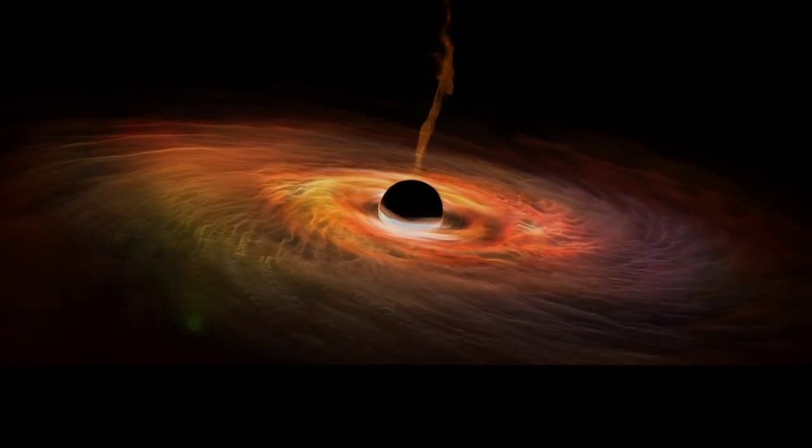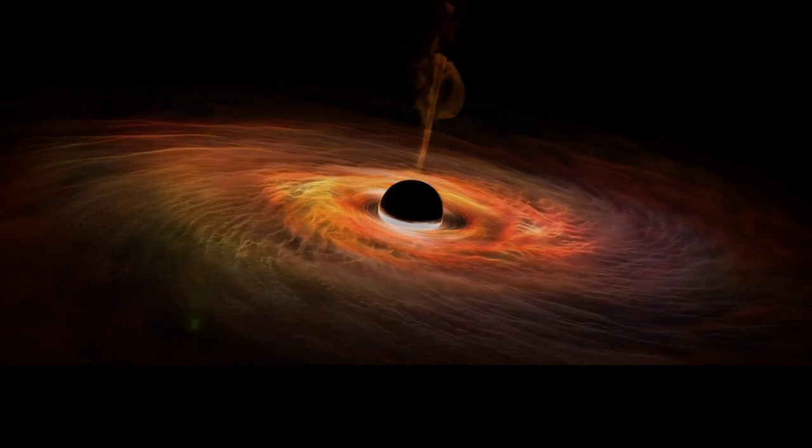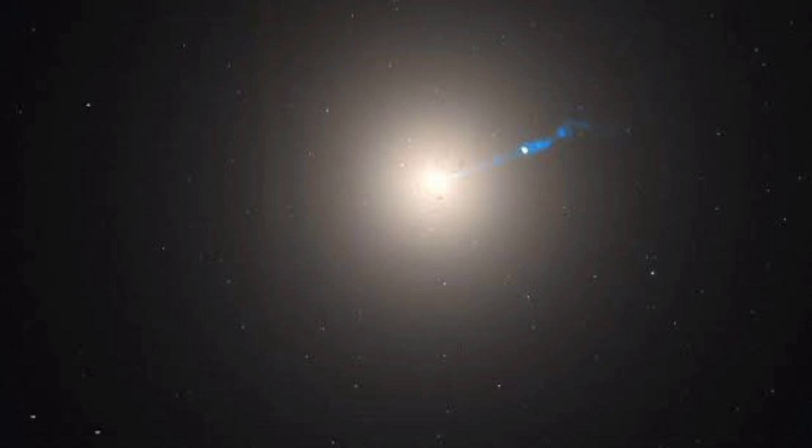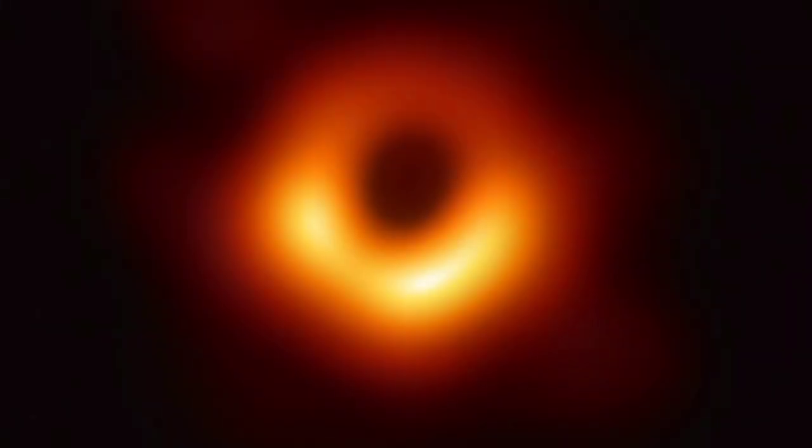In 2017, the Event Horizon Telescope obtained an image of the supermassive black hole at the center of the M87 galaxy. That black hole has a mass equal to six and a half billion suns but is only 38 billion kilometers across. It was the first black hole to be imaged directly.